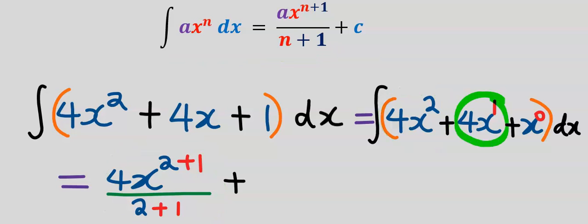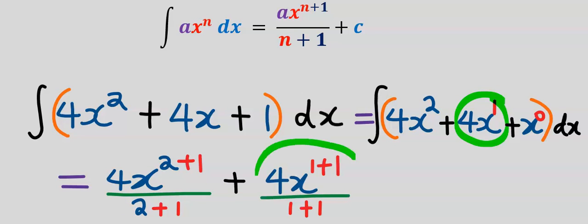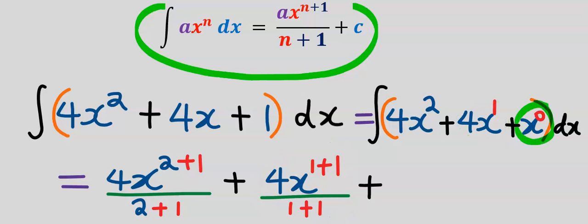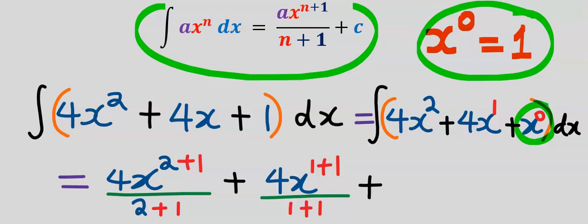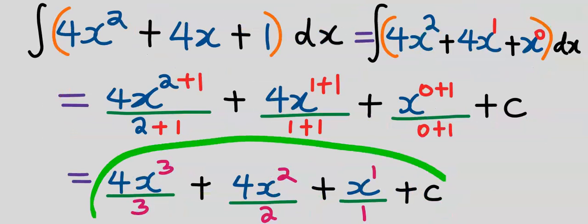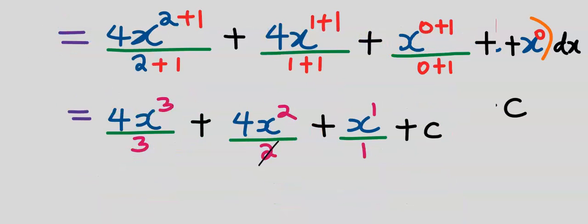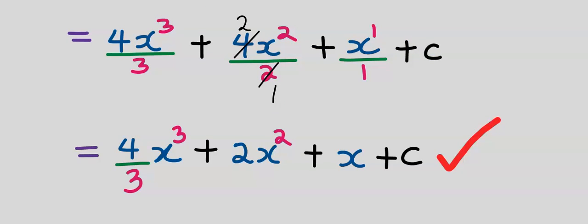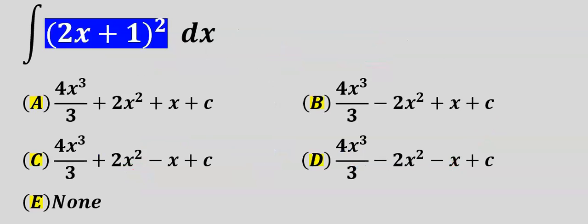Next we are going to integrate 4x squared, and our answer is given according to the power rule. Next let's integrate 4x, and our answer follows from the power rule. Next let's integrate x to the power of 0 — recall that anything to the power of 0 is equal to 1, so the integration of x to the power of 0 gives us x. When we are done we include plus C. Next we simplify: the 2s cancel appropriately, and this is our answer. From the options, our answer is A.